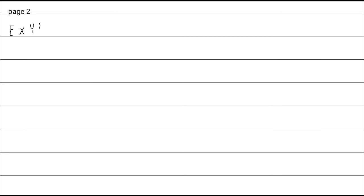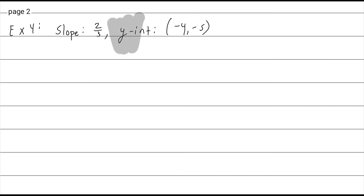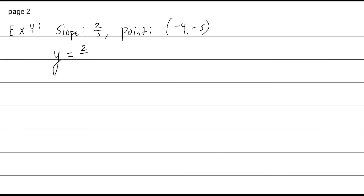Let's do another one. Example 4: the slope is 2/3, and the point is (-4, -5). This is just a point on the line, not the y-intercept — the x-value is not 0. So we use y = mx + b. If I plug in x = -4 and y = -5, this equation will have to be true.